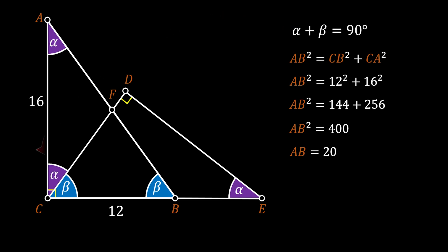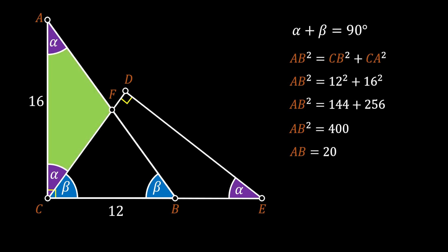With this in mind, we can easily conclude that the triangle ACF is actually an isosceles triangle. That means that the line FA of this triangle must be equal to the line FC.